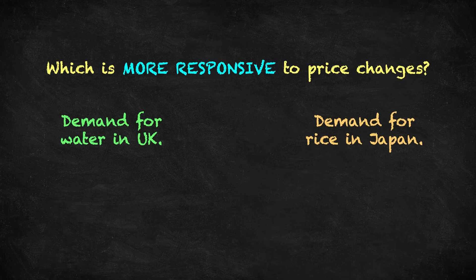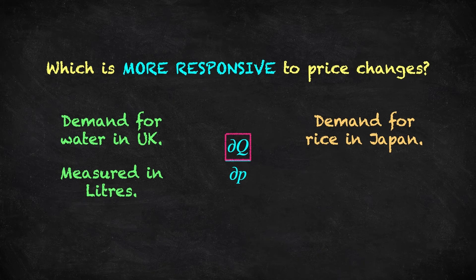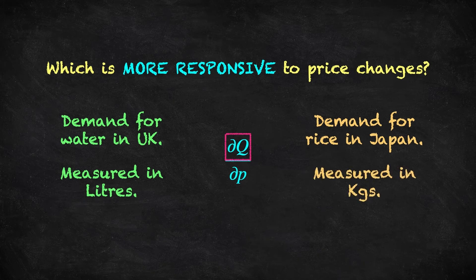My first thought would be to consider this, the partial derivative of demand with respect to price, dQ/dP. This does tell us how demand changes when price changes. Unfortunately, there are some problems here. This quantity term Q would be measured in litres when talking about water, but would perhaps be measured in kilograms when talking about rice. Changes in litres and changes in kilograms are not immediately comparable.